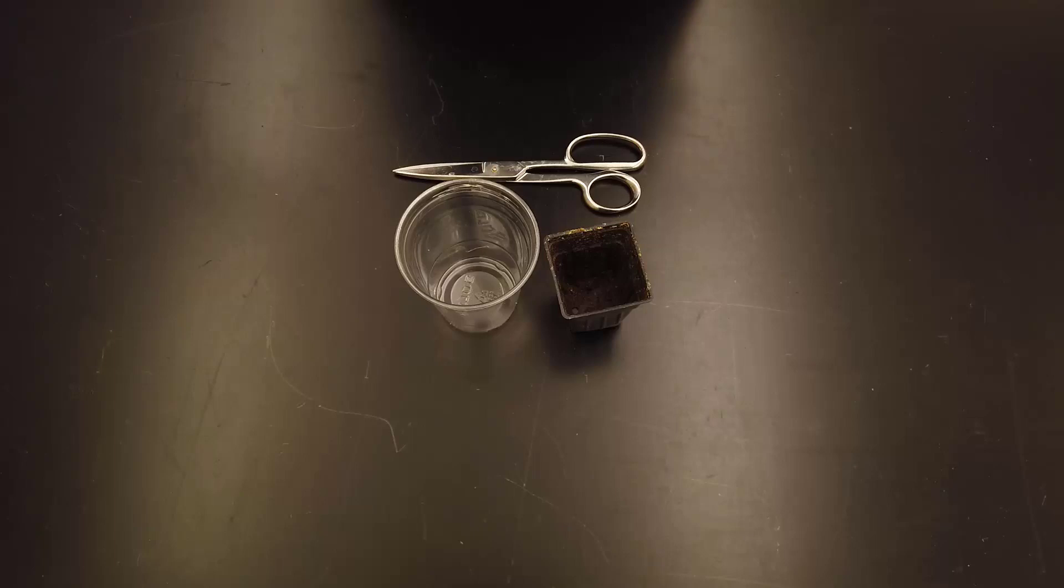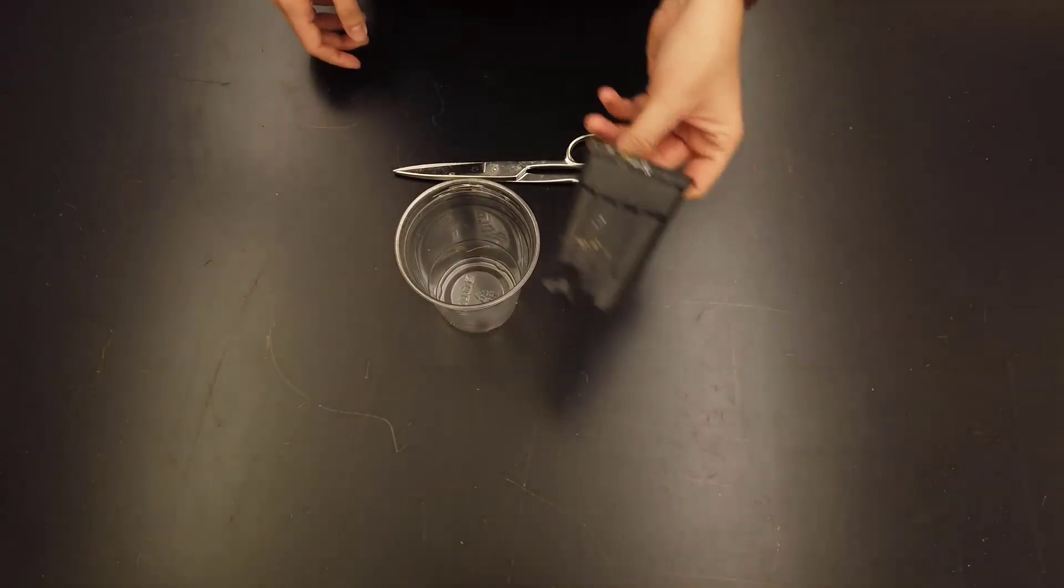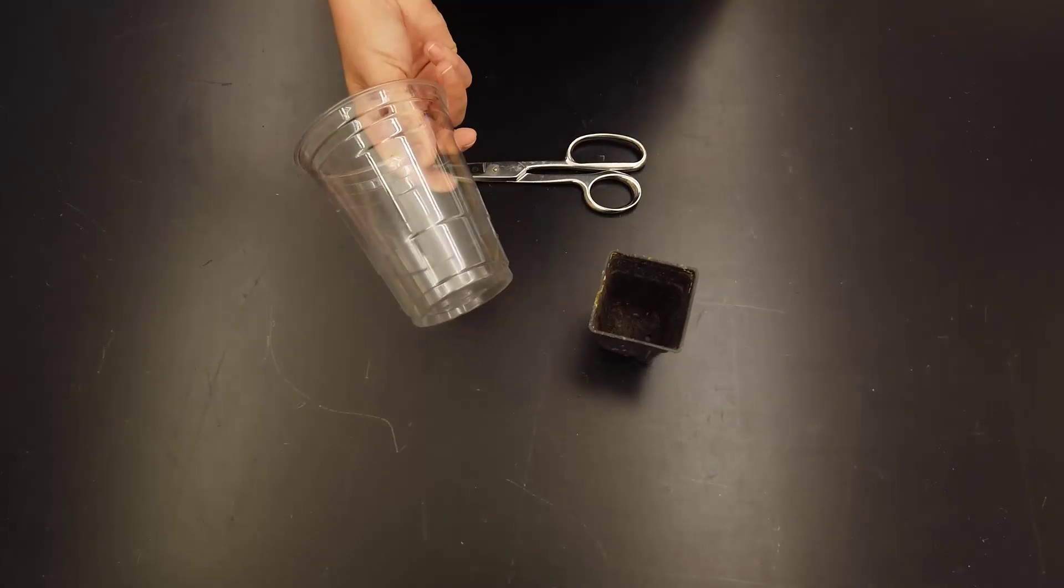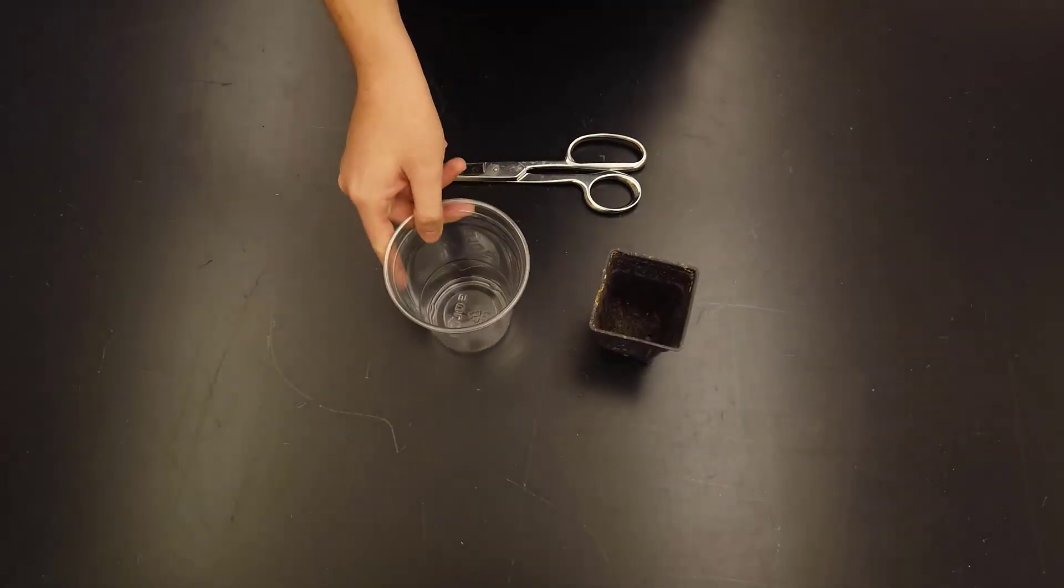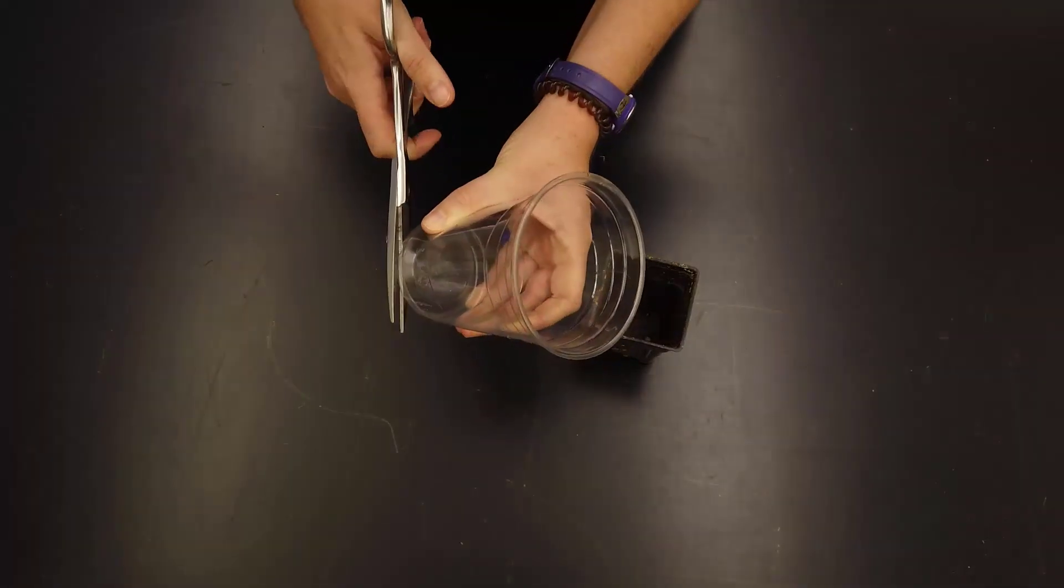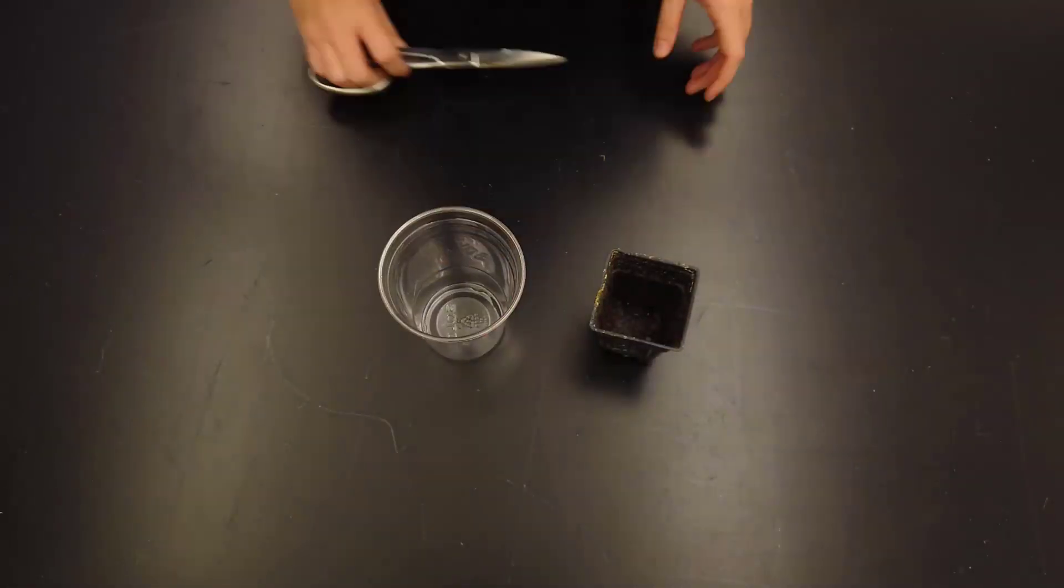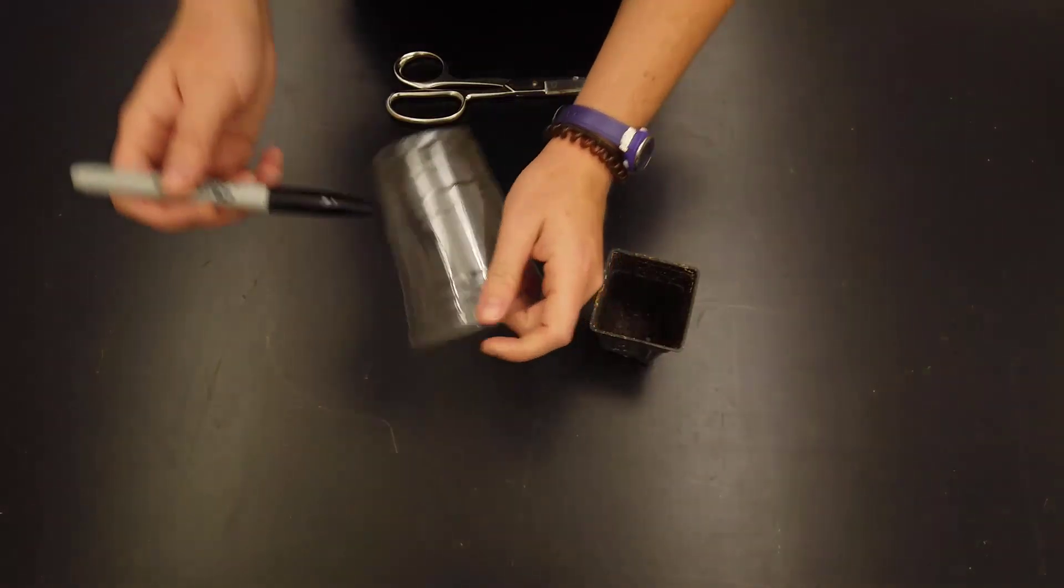For those of you sourcing materials on your own, you want plant pots or plastic cups. If you're using plastic cups, use scissors to make drainage holes. Label your cups or pots with the different treatments.